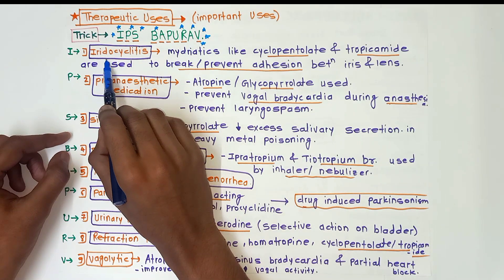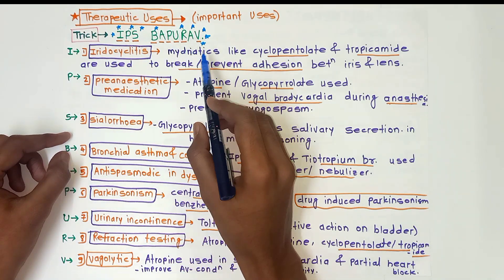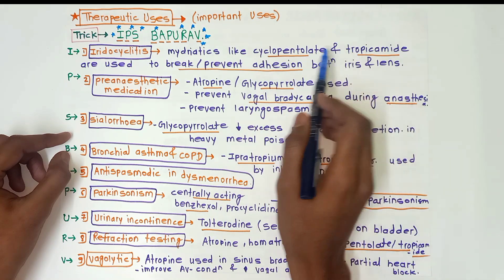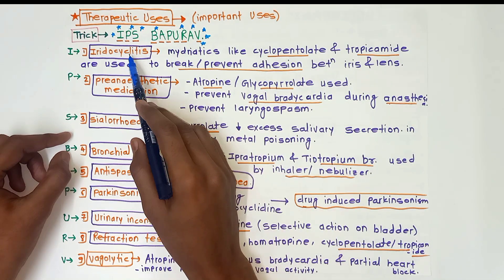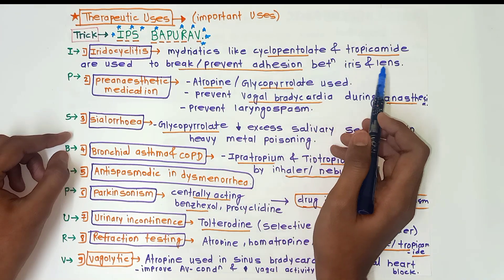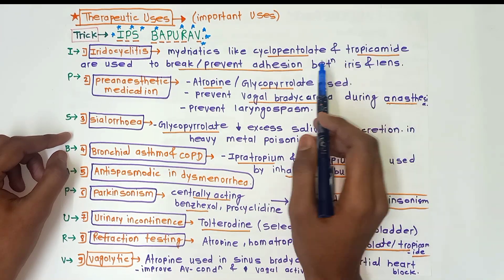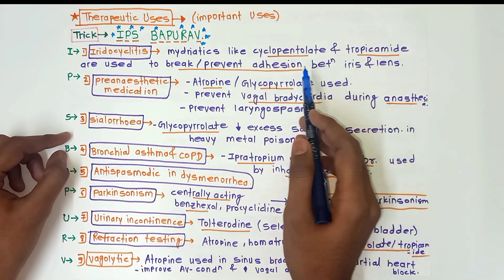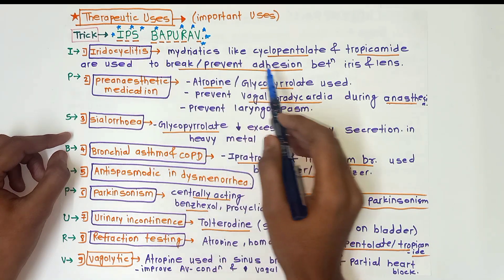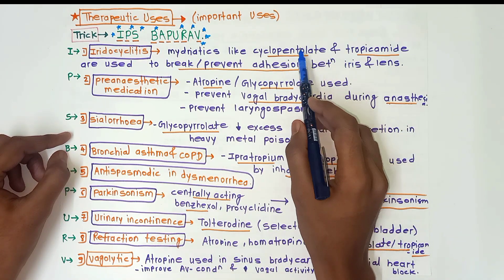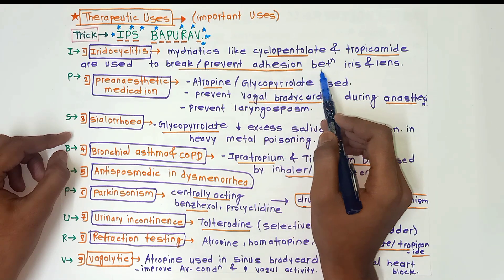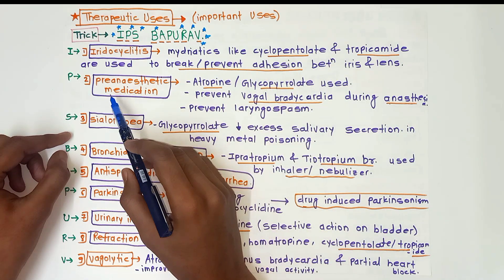First use: iridocyclitis. Mydriatics like cyclopentolate and tropicamide are used in this case. In iridocyclitis, there is adhesion between the iris and lens. Cyclopentolate and tropicamide break or prevent this adhesion between the iris and lens.